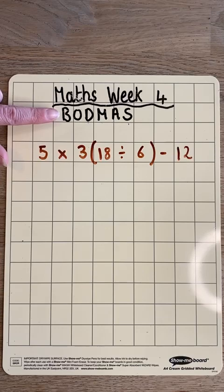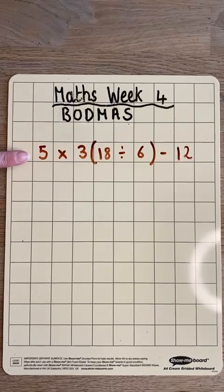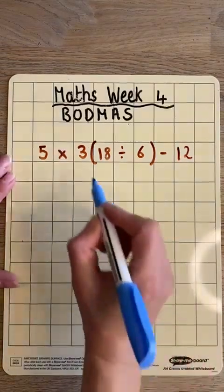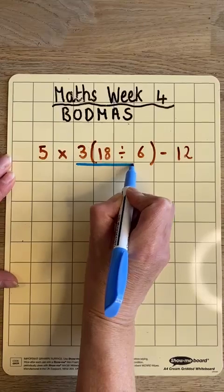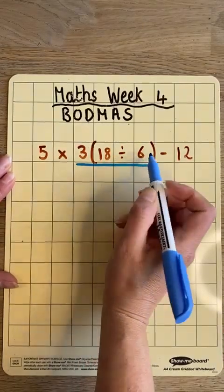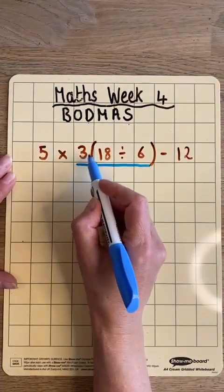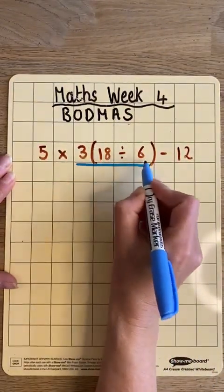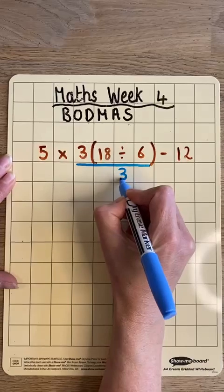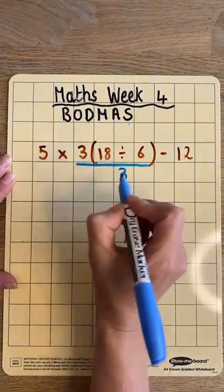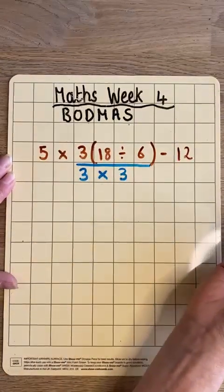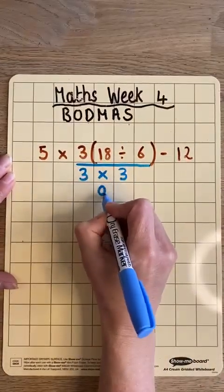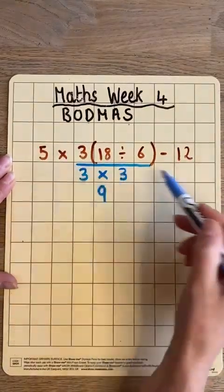At the top of the page I've written the word BODMAS here to remind me of the order of operations. So first of all I've got B for brackets. With my sum I'm going to focus first on anything with brackets. I'm going to focus here where 18 divided by 6 is inside the brackets, and the 3 outside the brackets means that everything here is multiplied by 3. So 18 divided by 6 is 3, and because it's multiplied by 3 I'm going to put 3 times 3. 3 times 3 is 9, so I'm going to put my 9 underneath so that I can continue with the rest of the sum.